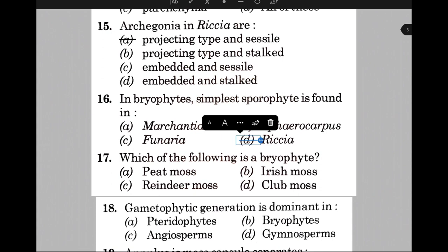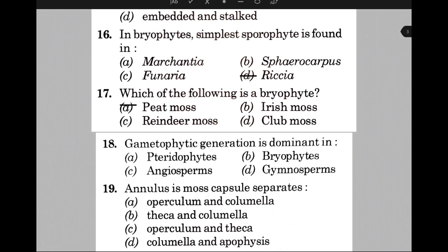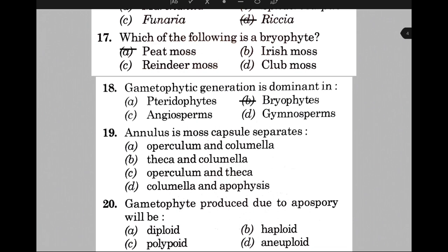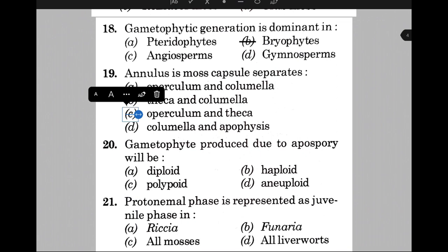Which of the following is a bryophyte? The answer is A, that is peat moss. Gametophytic generation is dominant in — the answer is option B, that is bryophytes. Annulus in moss capsule separates — the answer is C, that is operculum and theca. When the sporophyte is bursting, this separation takes place. Gametophyte produced due to apospory will be — the answer is option A, that is diploid.